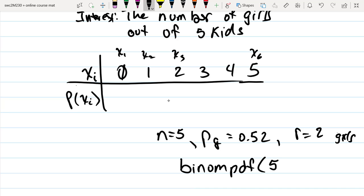There were five trials, probability of a success is 0.52, and the number of successes that we wish to calculate the probability for is 2. So what's the probability of having two girls is what this will give us.